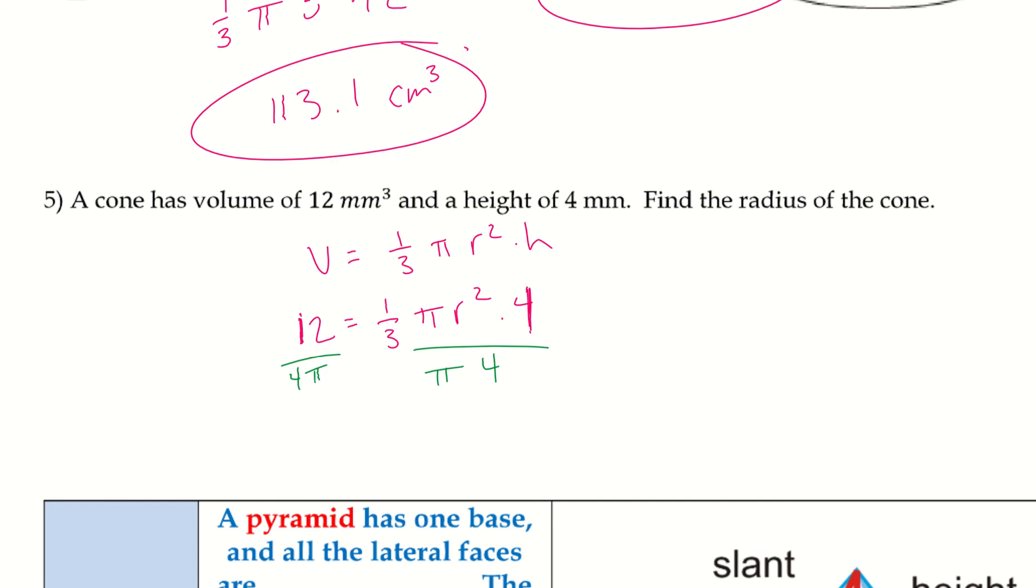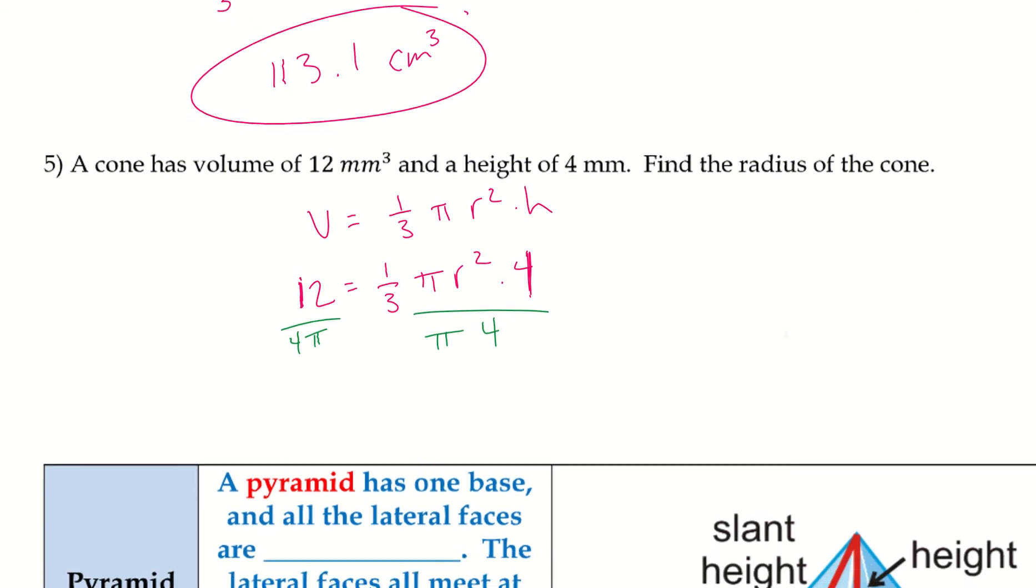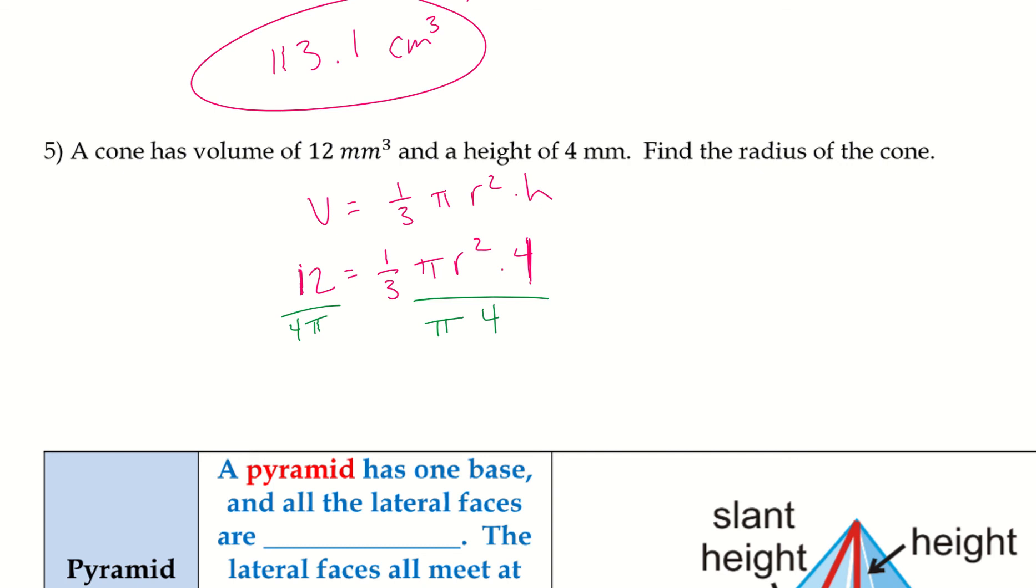All right, and it doesn't say to leave it in terms of pi or to find the decimal answer. Since there's no pi with my 12, I'm just going to go ahead and plug in 12 divided by pi into my calculator. So, 12 divided by 4 pi. Sorry, not just pi.